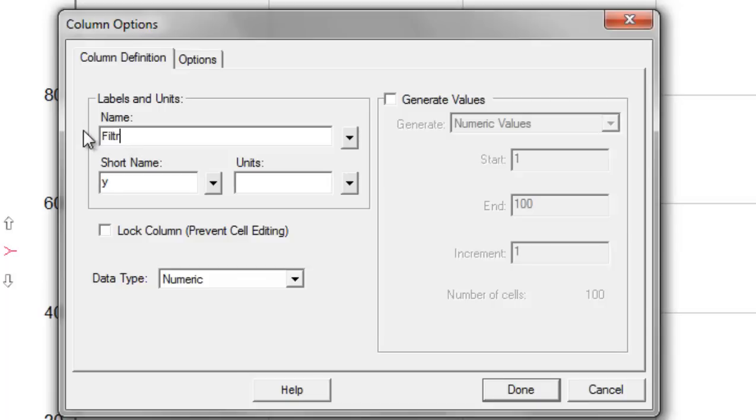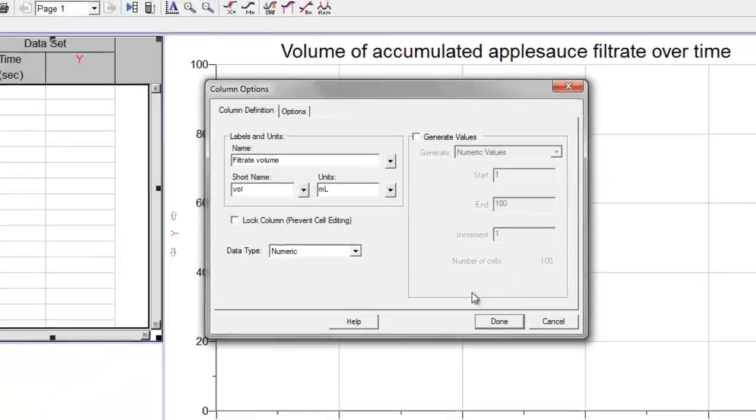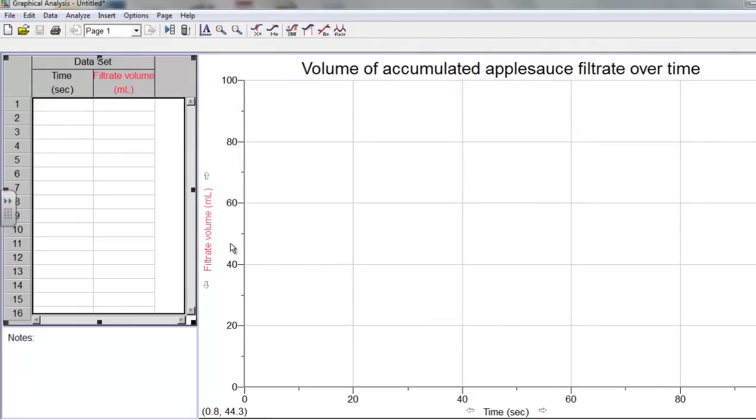I'm going to double click on y, get my Column Options window for y. This is going to be filtrate volume. My short name would just be volume. What were the units on the graduated cylinders that you used? That's lowercase m and then capital L, milliliters. I'm going to hit Done and look what happens - it populates up here and it populates on the graph correspondingly.